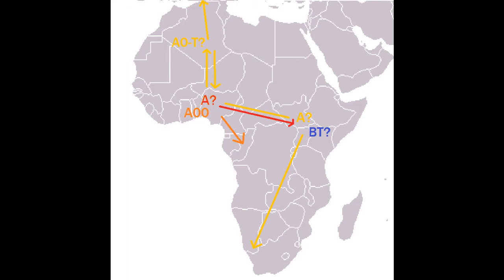The deepest rooted clade of A is A00, and that is a clade that exists in West Africa and in certain groups of Central African pygmies as well. As you can see, I've drawn that migration.